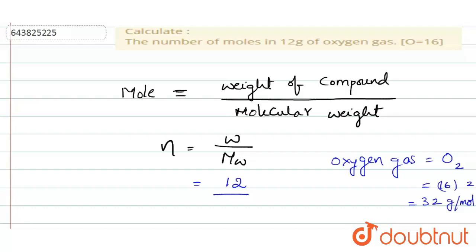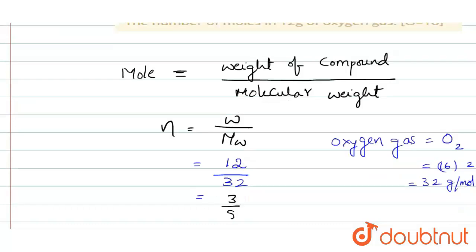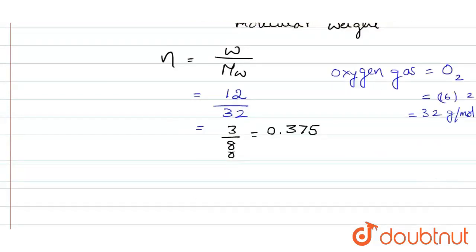Grams per mole. That is why we can substitute 32 here. It is equal to 3 by 8, that is 0.375. So, number of moles is equal to 0.375. Thank you.